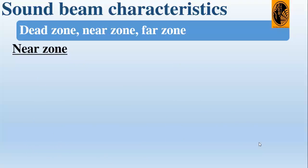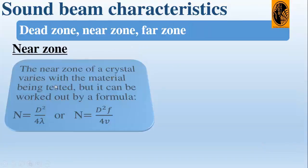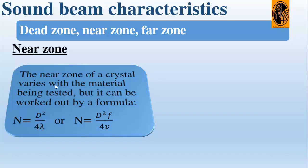The second zone is the near zone. The near zone of a crystal varies with the material being tested, but it can be worked out using this formula: N = D²/(4λ). Lambda can also be replaced by frequency divided by velocity.